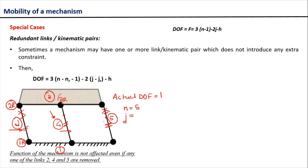Continuing the count: 4th revolute pair, 5th revolute pair, and 6th revolute pair. So the total number of revolute pairs in this mechanism is equal to 6.